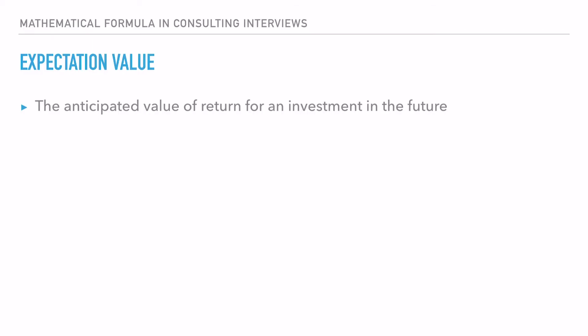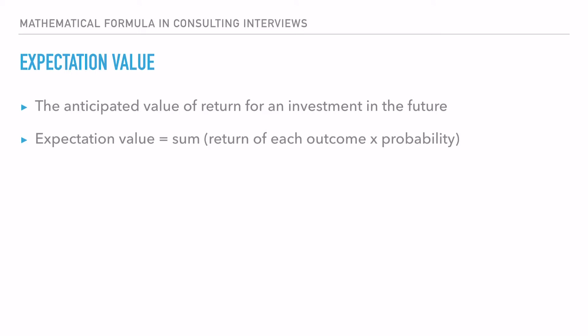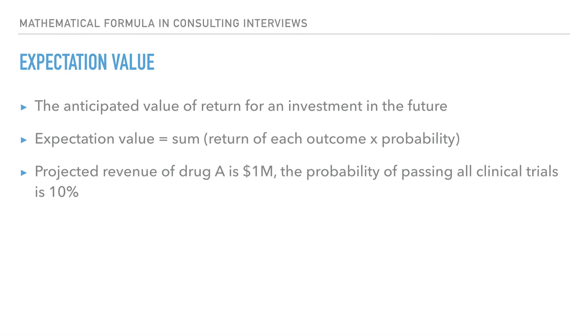The last formula is expectation value. Expectation value is the anticipated return on an investment in the future. Mathematically, it is calculated by multiplying each outcome by its probability and summing all outcomes. In case studies, this is often used in drug testing scenarios.